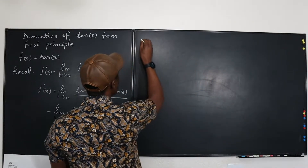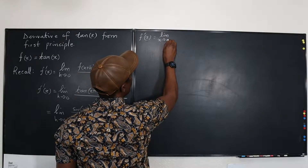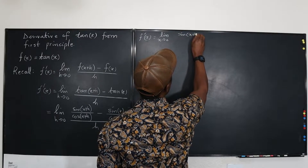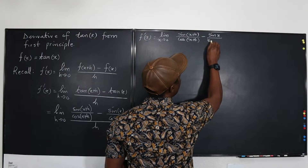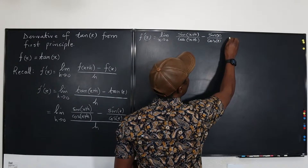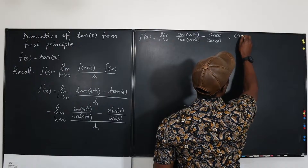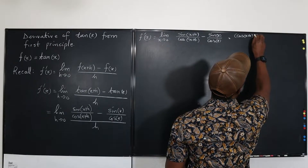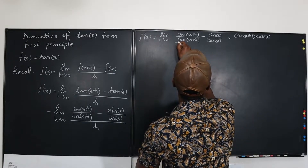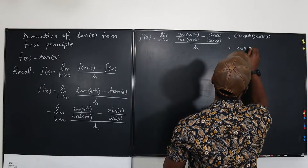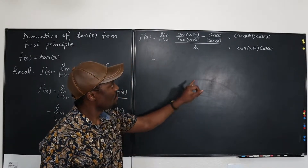So f′(x) is the limit as h goes to zero of sin(x+h)/cos(x+h) minus sin(x)/cos(x). The denominators on top are cos(x) and cos(x+h), so we multiply through by cos(x+h)·cos(x). We multiply both the numerator terms and the denominator by that same factor: cos(x+h)·cos(x).